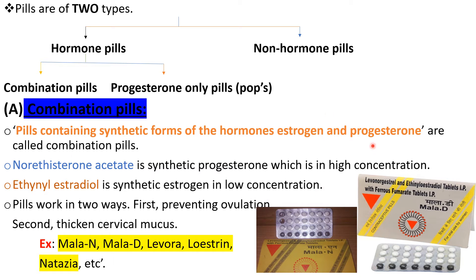Combination pills work in two ways: first, they prevent ovulation; second, they thicken the cervical mucus. Some examples of combination pills are Malan, Maladi, Levora, Loestrin, and Natazia. A pictorial representation of Malan and Maladi is shown, with the chemical combination in the tablet also mentioned on the pack.